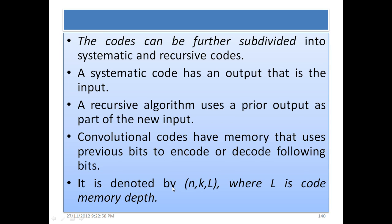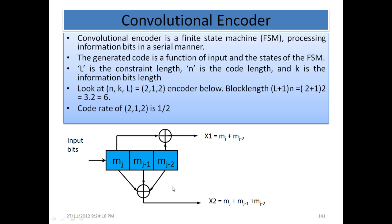Convolutional codes have memory that uses previous bits to encode or decode following bits. This is denoted by N, K, L where L is the code memory depth. A convolutional encoder is a finite state machine — it has memory, it has registers to hold old values, and the output depends on them. The generated code is a function of the input and the states of the FSM — that is, what is in the memory of the registers.